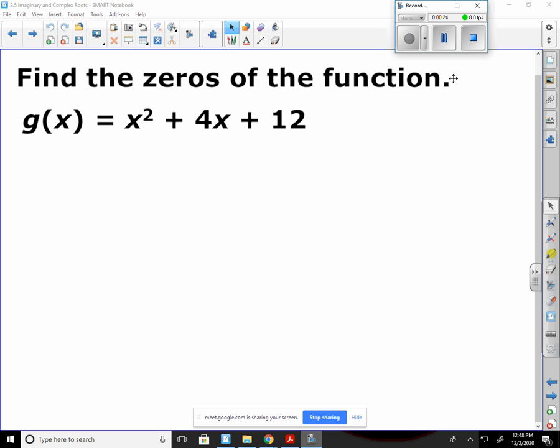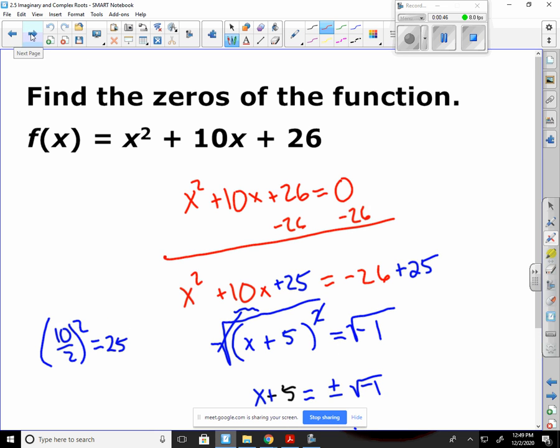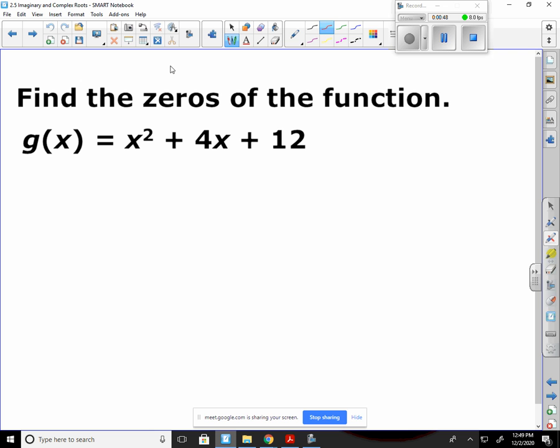So starting here, I have x squared plus 4x plus 12, and I need to find my zeros of this function. If you remember from the last time we actually took notes, we started by just completing this square. So that's the same path we're going to head down.